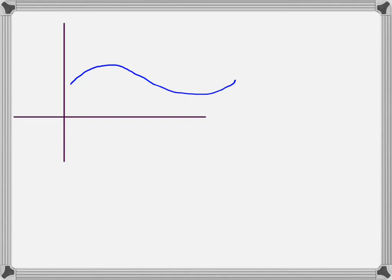This video is about particle motion in two or three dimensions. If we have a particle that's traveled along the blue path starting at the origin, at one second we put the tail of the position vector at the origin and the head is where the particle is at one second. At one and a half seconds, the particle will be at the head of the r sub 1.5 vector. We would then have a change of position between one and 1.5 seconds — that would be the change of r vector.